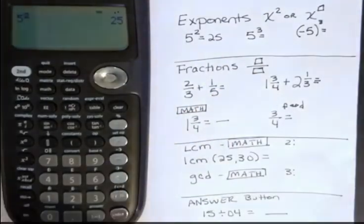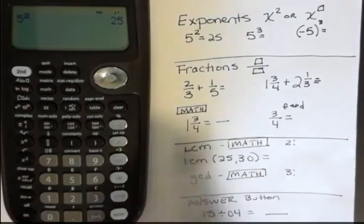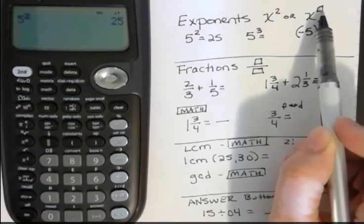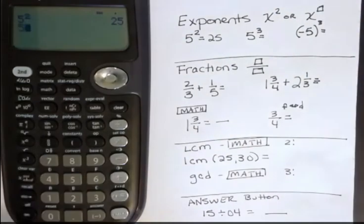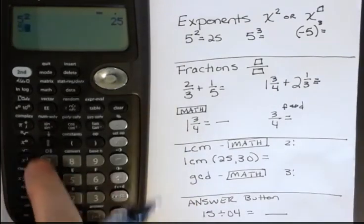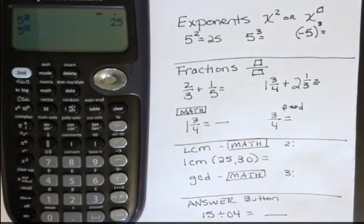If you want to take something to the third power, then you can use the button above that, and that has an x with a little empty box, and that just means you can put whatever you want in that. So I'm going to hit 5, and then I'm going to hit that button. Whoop, I didn't hit that button, I hit the one above it, below it.